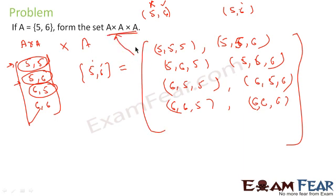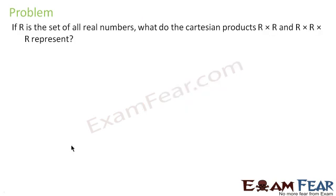So what we have done is: we found A×A to get that intermediate set, and then for A×A×A we took each element of A×A paired with each element of A to get all the ordered triple values. Similarly, we found all the remaining values.